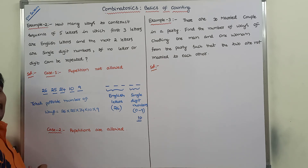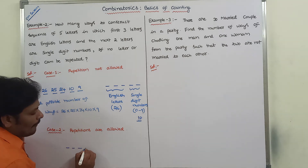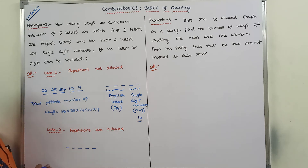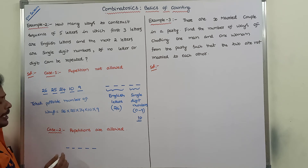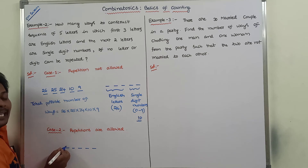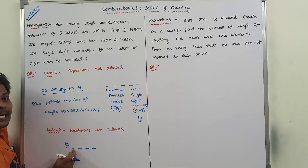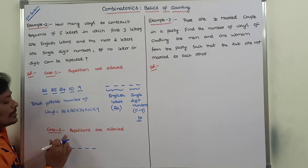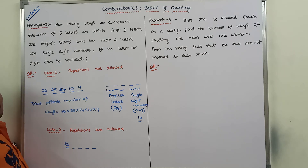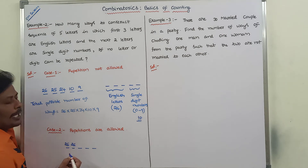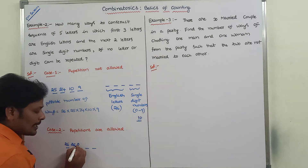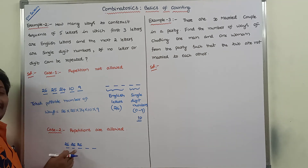Second case: repetitions are allowed. There are 5 vacant places — the first 3 filled with English letters and the next 2 with single digit numbers. For the first vacant place, 26 English letters are there, so 26 ways. For the second empty space, 26 choices are there because repetition of English letters is allowed. Again, 26 choices for the third vacant place because repetition is allowed.